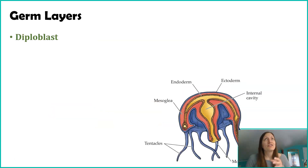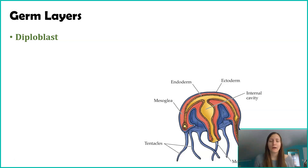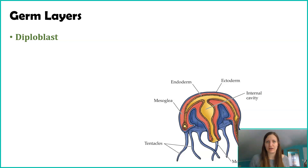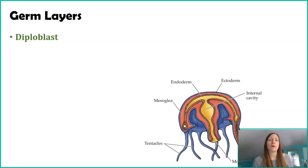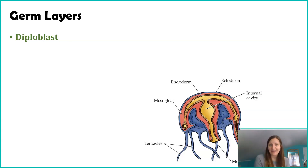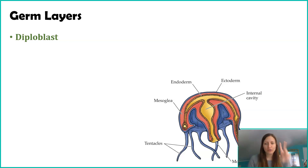As an organism, as an animal, you can be classified simply by how many germ layers you have. One classification are organisms that are diploblasts. Di — meaning two — so diploblasts have two germ layers.